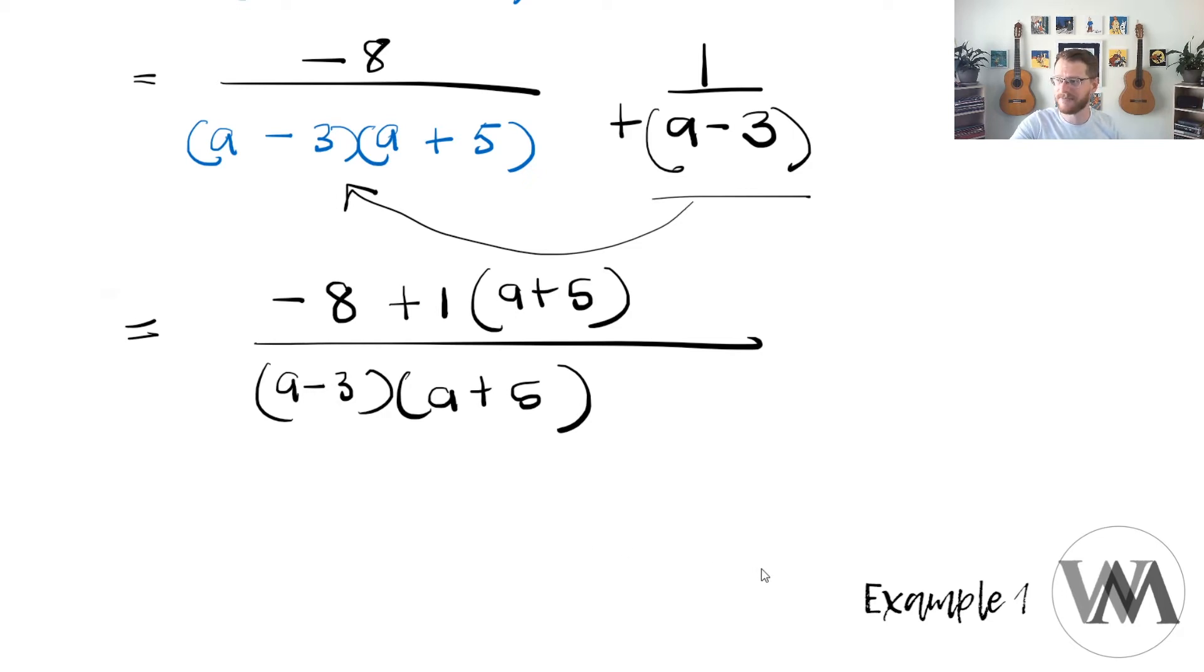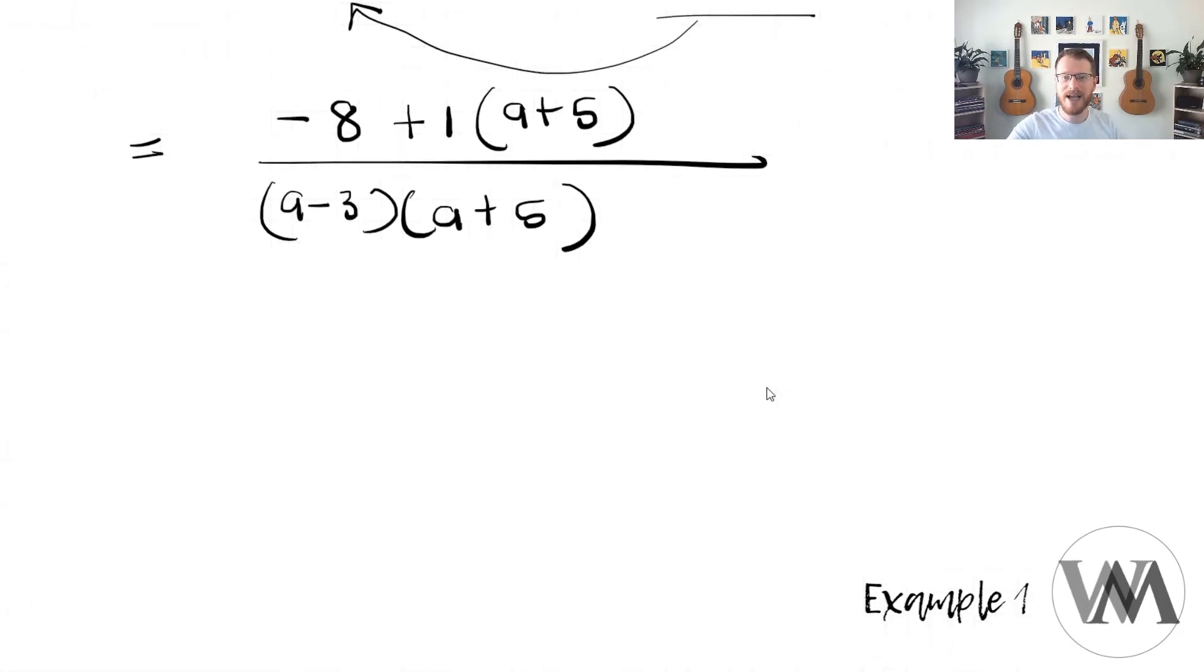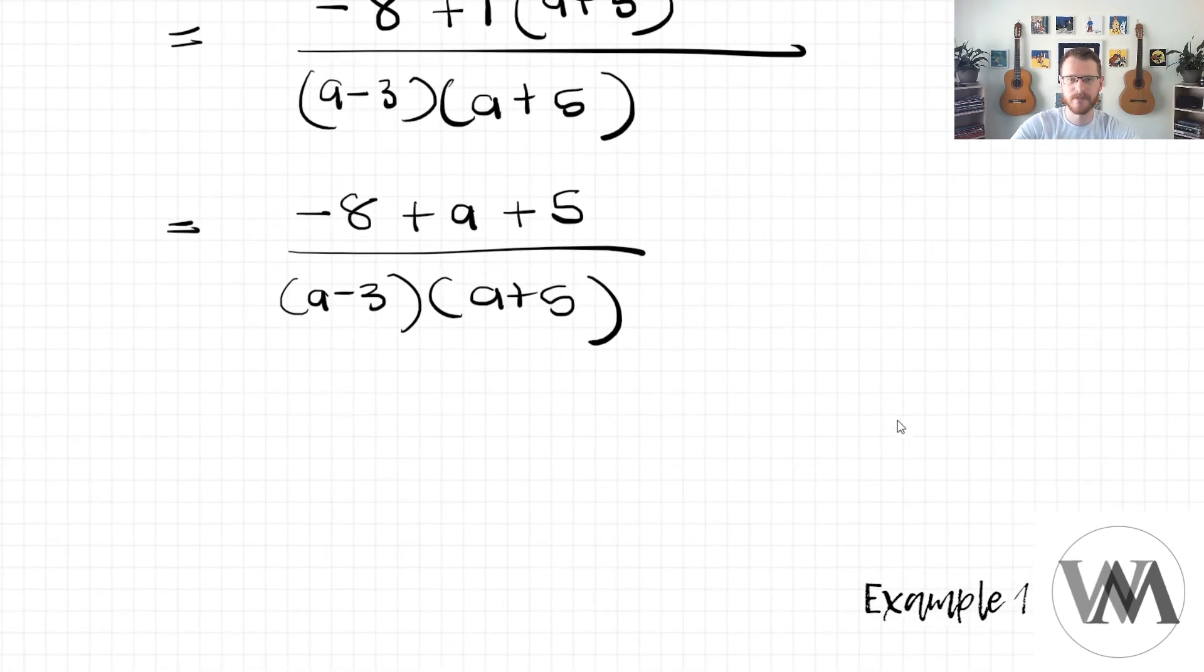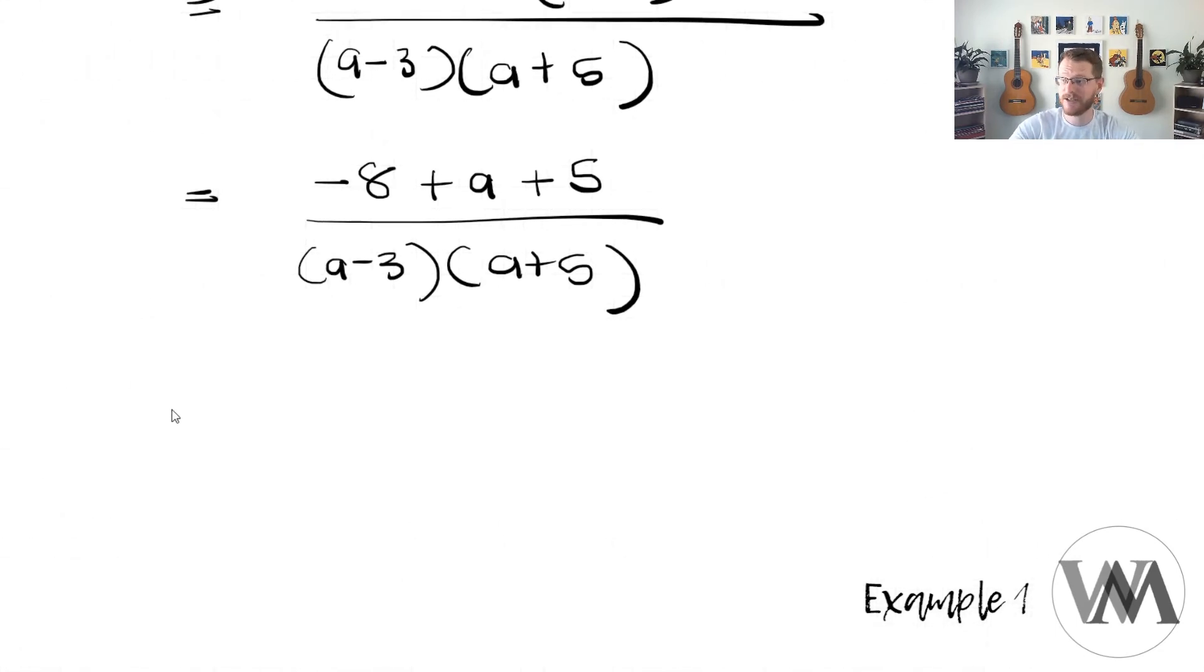Now I'm not done yet. I cannot now go and say, well, a plus 5 and a plus 5 is present in both, so I'm just going to cancel these two out. No, I first need to find the products of this new numerator. So in order to add up the like terms, -8 plus 1 times a gives me plus a, plus 1 times 5 gives me 5, over a minus 3, a plus 5.